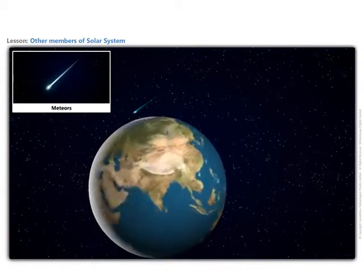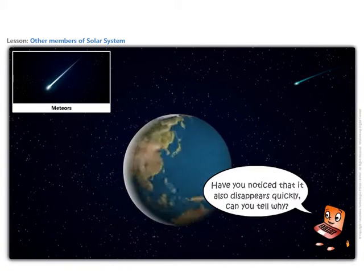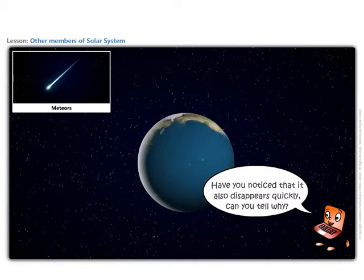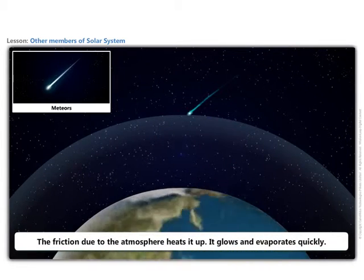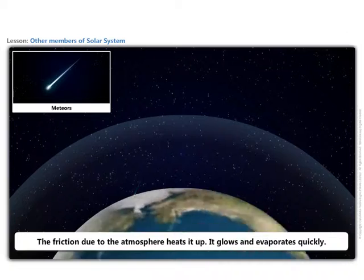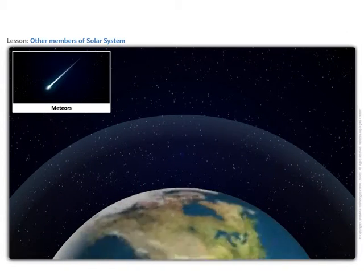Have you noticed that it also disappears quickly? Can you tell why? The friction due to the atmosphere heats it up. It glows and evaporates quickly. That is why the bright streak lasts for a very short time.